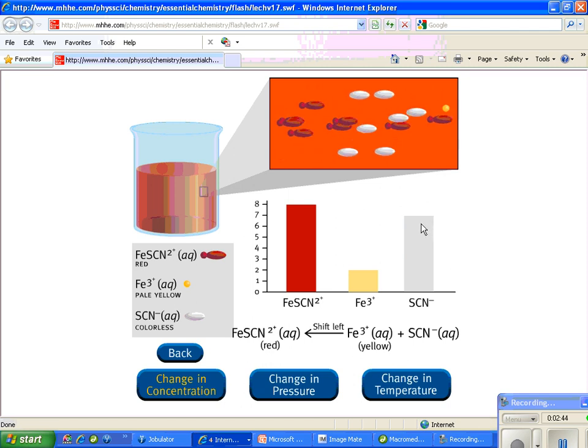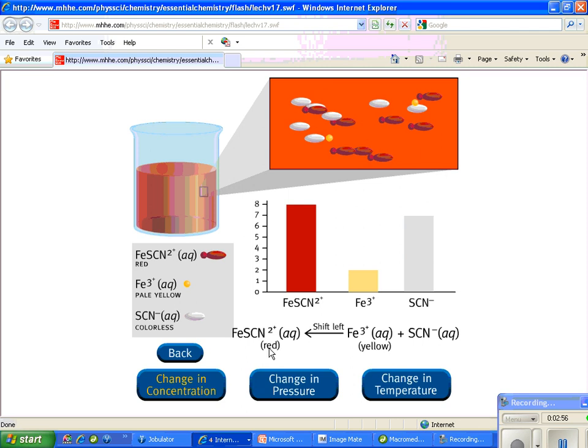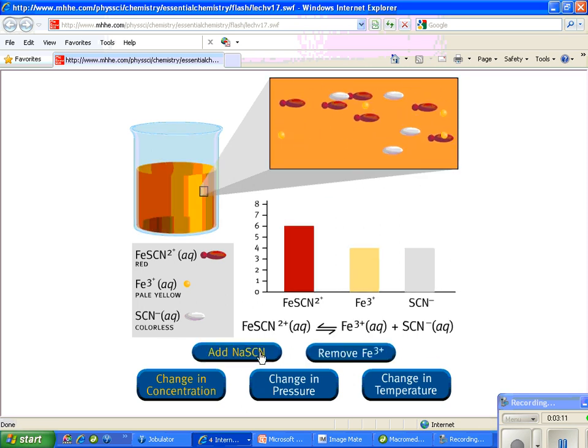When Le Chatelier got in the act, this went down, this went down, and this guy went up. Let's watch it again. See? Colorless guy went up, and now Le Chatelier is doing the left shift, and both the colorless and the yellow went down, and the red went up. That's what Le Chatelier does. So let's go through the logic of what he actually did.